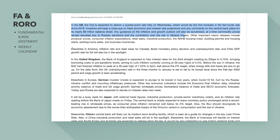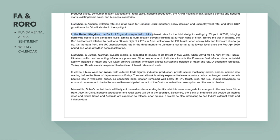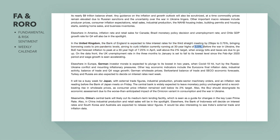Fundamentally, all roads lead back to GDP and inflation as to what a central bank will do. Elsewhere, inflation rate and retail sales for Canada will be watched. In the United Kingdom, the Bank of England is expected to hike interest rates for the third straight meeting by 25 basis points to 0.75%, bringing borrowing costs to pre-pandemic levels, aiming to curb inflation currently running at 30-year highs — about 5.5%. Before the war in Ukraine, the Bank of England had forecast inflation to peak at a 30-year high of 7.25% in April.